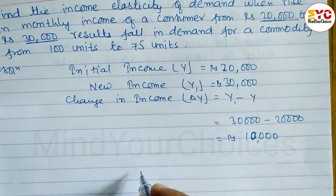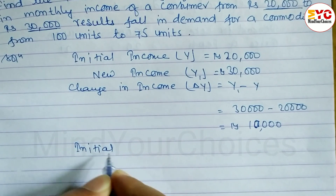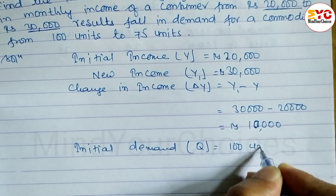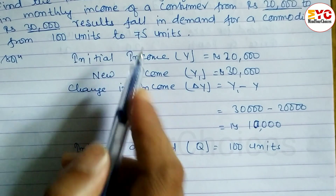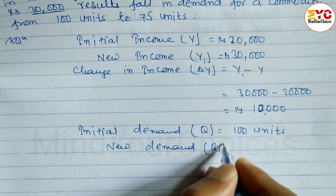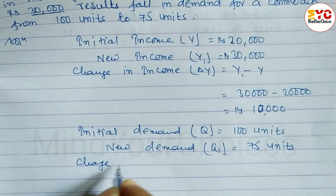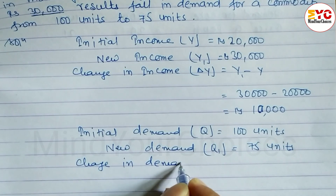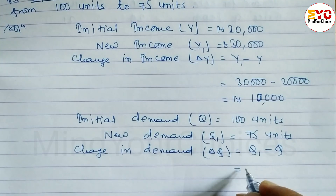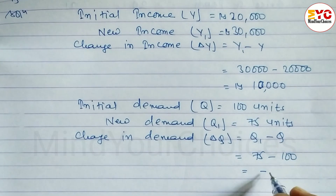Similarly, demand declines. The initial quantity demanded, Q, is equal to 100 units. The new demand, Q1, is equal to 75 units. The change in demand, ΔQ, equals Q1 minus Q, which is 75 minus 100, giving us minus 25 units. So the change in quantity demanded is minus 25.